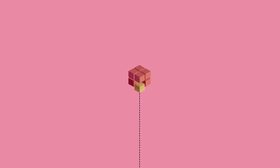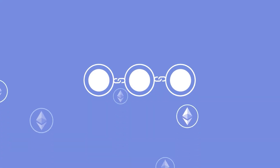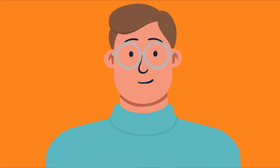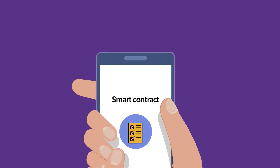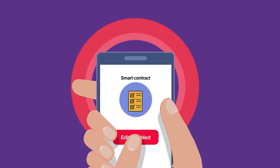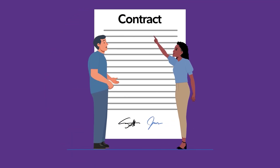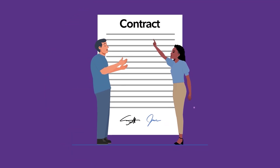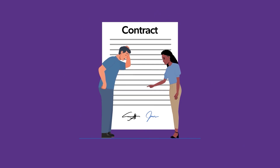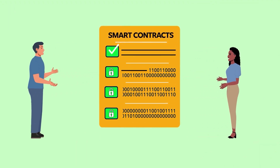Smart contracts live on blockchains, like Ethereum, which makes them transparent, and anyone can check and verify everything is accurate. But their code is immutable, meaning once signed, you can't change or manipulate them. Many traditional contracts are intentionally written with subjective language to leave room for interpretation, but smart contracts have clearly defined terms that execute automatically.